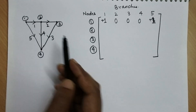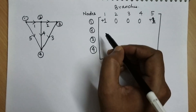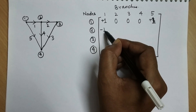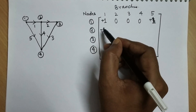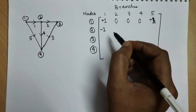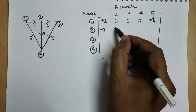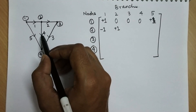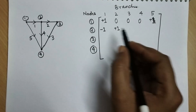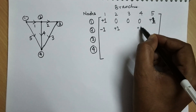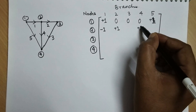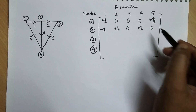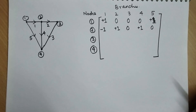For node two: branch one is incoming, so it is minus one. Branch two is outgoing, so it is plus one. Branch four is also outgoing, so it is plus one. The other branches are not connected to node two, so they become zero.